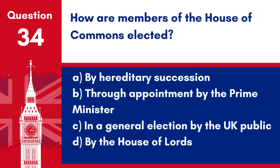Question 34: How are members of the House of Commons elected? a. By hereditary succession. b. Through appointment by the Prime Minister. c. In a general election by the UK public. d. By the House of Lords. Answer: c. In a general election by the UK public. Members of the House of Commons, MPs, are elected to represent constituencies in a general election.